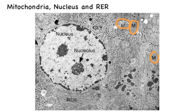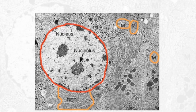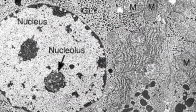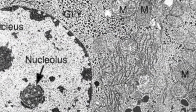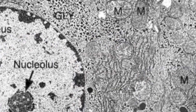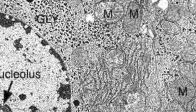Here I'm distinguishing between the mitochondria, which I'm circling in orange labelled with an M, the rough endoplasmic reticulum RER also in orange, and I'm circling around the nucleus in red. Zooming in, it is once again possible to identify the mitochondria by the lines on the inside formed by the inner membrane.